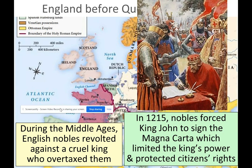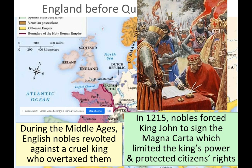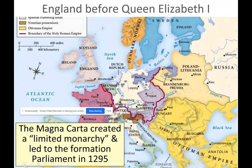During the Middle Ages, English nobles revolted against a cruel king who had overtaxed them. In 1215, nobles forced King John to sign the Magna Carta — a document like a constitution that limited the king's power and also protected citizens' rights.